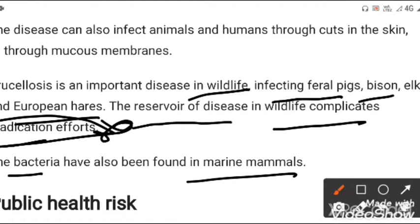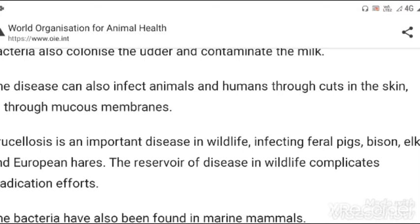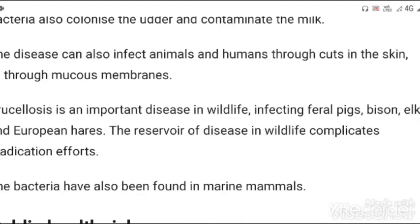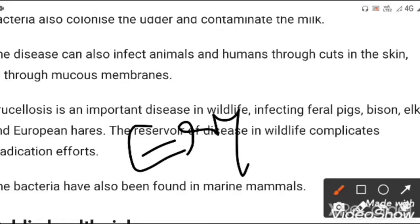Regarding the pathogenesis of the disease, bacteria enter the body via ingestion, inhalation, or skin cuts. After entering the body, they colonize the regional lymph node where they proliferate and then spread to other organs such as the reproductive organs via the lymph. In the case of pregnant animals, the chemical erythritol helps drive high affinity towards the reproductive organs.